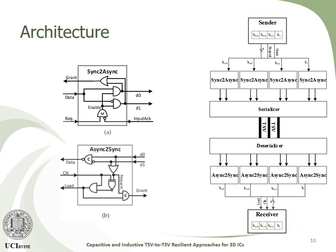Two wrappers are used in this approach: a synchronous-to-asynchronous wrapper and an asynchronous-to-synchronous wrapper. In these wrappers, C elements are used, and the inputs and outputs to the wrappers are three bits — two bits for the dual rail coding and one bit for the asynchronous acknowledgement.